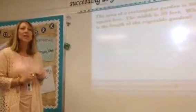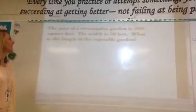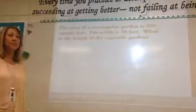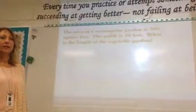Katie, read this to me. Can you see it? The area of a rectangle garden is 300 square feet. The width is 50 feet. What is the length of the vegetable garden?